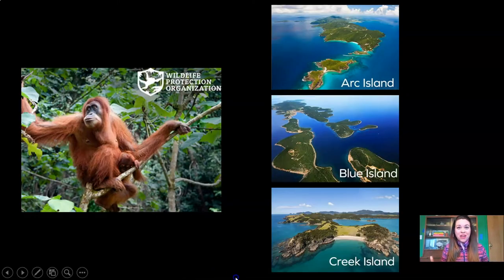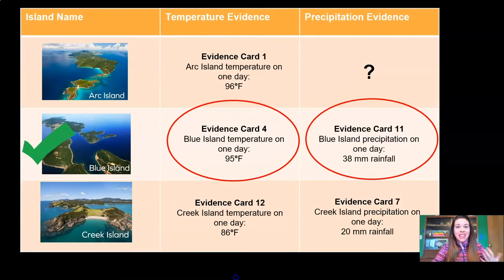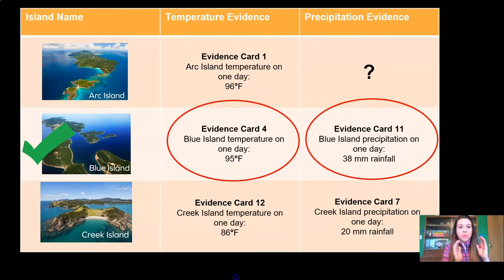By now, you definitely know that we're working as meteorologists for the Wildlife Protection Organization, trying to compare and evaluate evidence about Arc Island, Blue Island, and Creek Island to decide which island would make the best reserve for orangutans. Last time, we used evidence cards and we decided which pieces of evidence were strong and which were weak. Then we took all of the strong evidence and sorted them into a table by precipitation and temperature so that we could compare and evaluate which island is the best. And I think we decided on Blue Island.